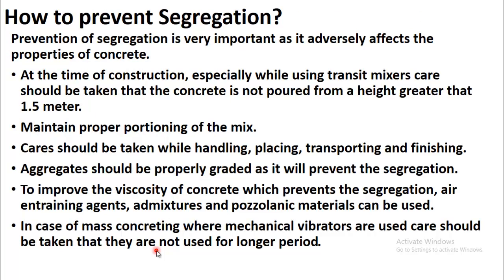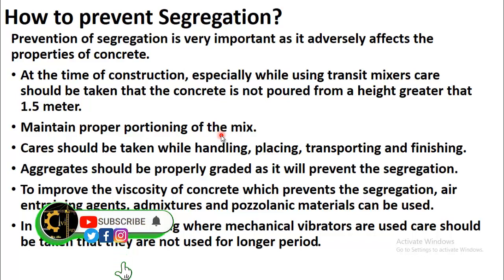Now coming to the most important question: how can we prevent segregation? Prevention of segregation is very important as it adversely affects the properties of concrete. At the time of construction, especially while using transit mixers, care should be taken that concrete is not poured from a height greater than 1.5 meters. Maintain proper proportioning of the mix, and care should be taken while handling, placing, transporting, and finishing.